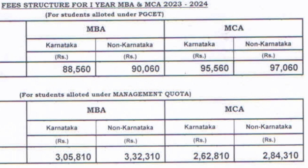Now for the MBA part: the fees for MBA students from Karnataka is 88,560 rupees per year. For non-Karnataka, the fees is 90,060 rupees. So you can see a 1,500 rupee difference in the MBA fees between Karnataka and non-Karnataka students. This fee includes the KEA fees and is applicable through PGCET.